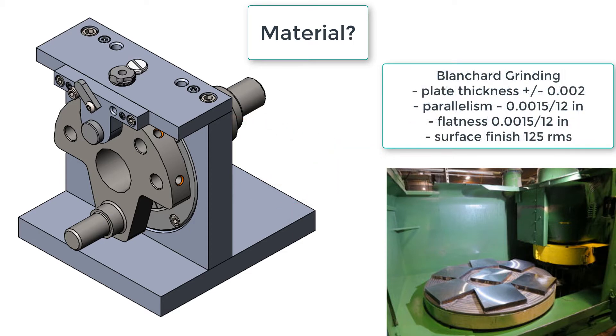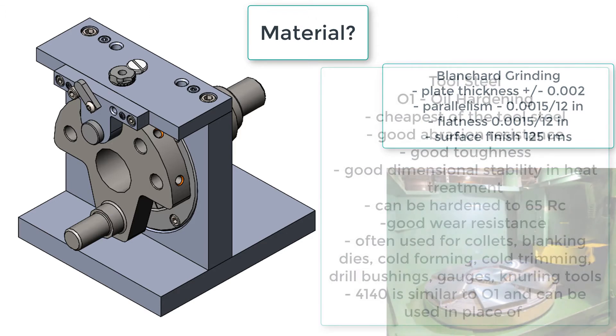Blanchard ground plates are often purchased because the process can guarantee a plate thickness of plus or minus 2 thou, a parallelism of 1.5 thou for every 12 inches, a flatness of 1.5 thou per foot, as well as a 125 RMS surface finish.